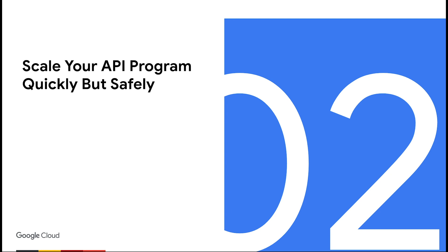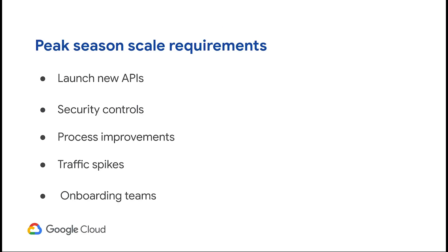Let's talk about a few problems enterprises face while scaling their API programs to meet peak season demands. You might want to launch 10x new APIs for a new product launch, do more integrations with upstream or backend servers, and enforce more security policies consistently as you open up more channels to consume your APIs. You also need to validate that processes you have in place, like CI/CD or governance rules, are able to handle that scale.